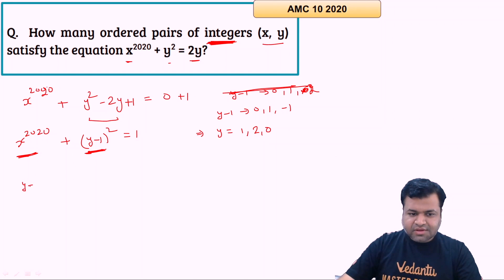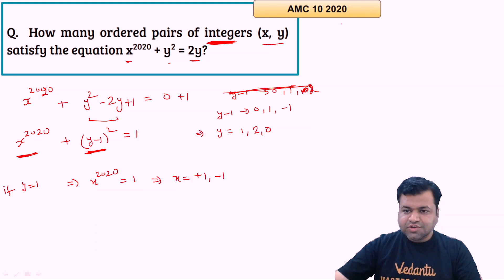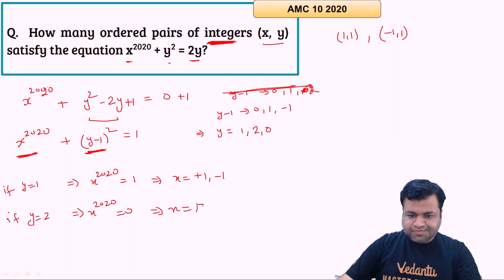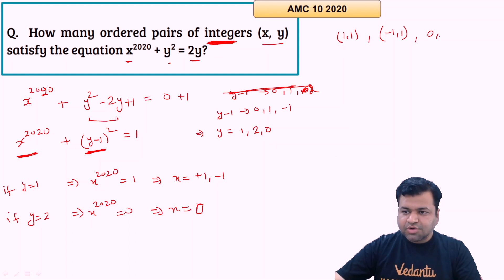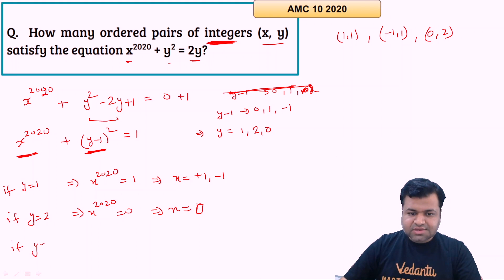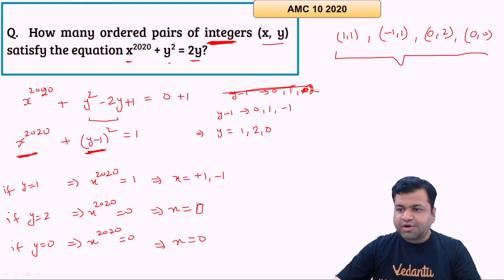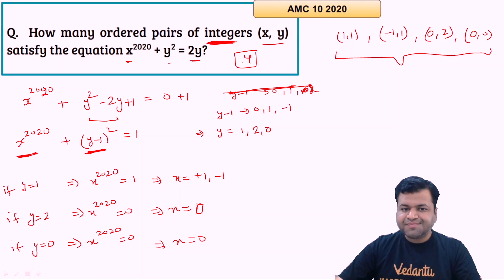Case y=1: (y−1)²=0, so x^2020=1, giving x=+1 or x=−1. That yields two ordered pairs: (1,1) and (−1,1). Case y=2: (y−1)²=1, so x^2020=0, giving x=0. One ordered pair: (0,2). Case y=0: (y−1)²=1, so x^2020=0, giving x=0. One ordered pair: (0,0). In total we get four ordered pairs, so the answer is 4.